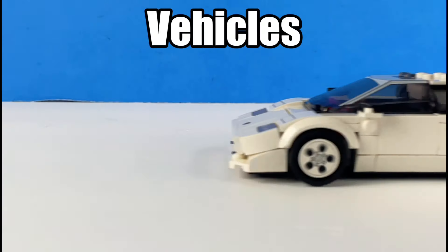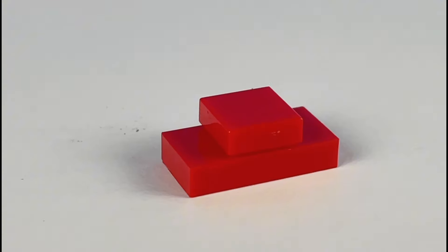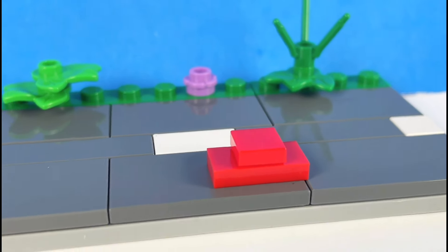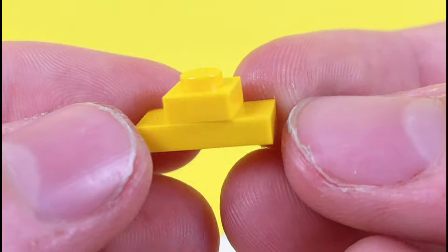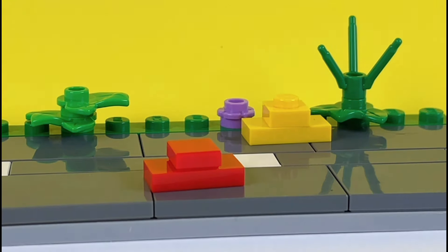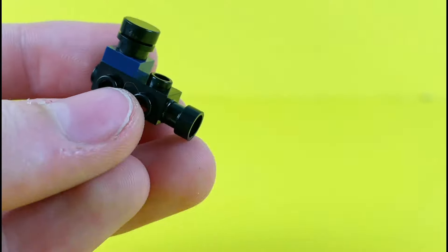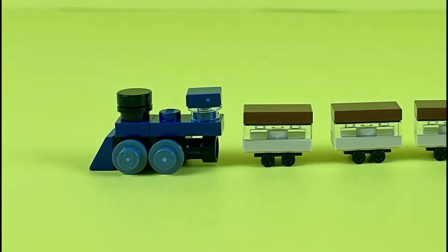Vehicles. I built this car using only two pieces, a jumper plate, and a plate. You can build a taxi basically doing the same thing, but just switching the colors. If you use this weird gun piece, and add these pieces onto it, you get the front of a train. Just put these one by two pieces to get the carriages.